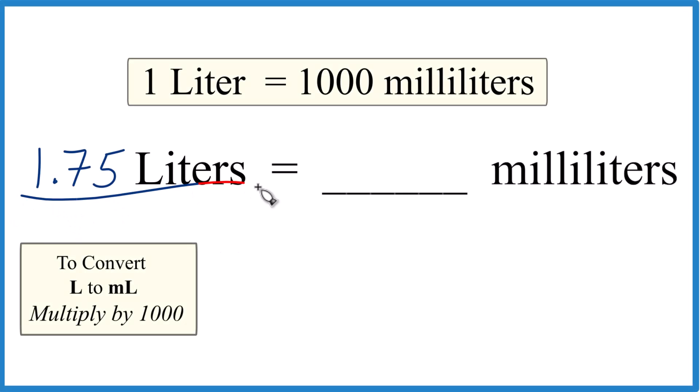Let's convert 1.75 liters to milliliters. Here's how you do that. So one liter equals a thousand milliliters. Something good to memorize. That's our conversion factor.